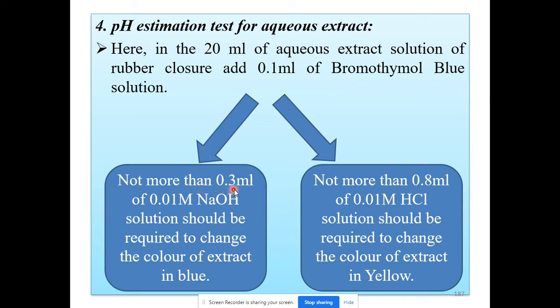Not more than 0.3 ml of 0.01 molar NaOH solution should be required to change the color of the extract to blue. Not more than 0.8 ml of 0.01 molar HCl solution should be required to change the color of the extract to yellow. You have to titrate the 20 ml of the extract with either 0.01 molar NaOH or 0.01 molar HCl.